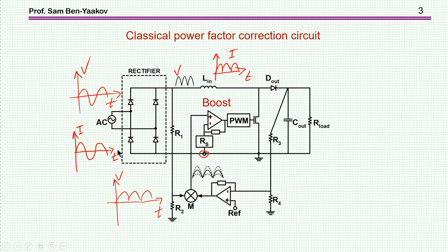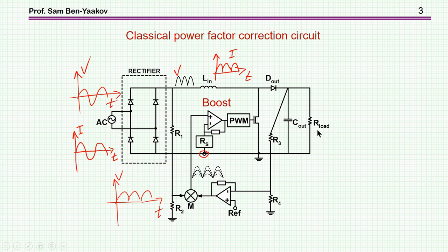This is the classical power factor correction circuit. We have a bridge rectifier rectifying the AC voltage to produce a DC pulsating voltage. This is the boost stage: it's the inductor, switcher, and an output diode. This is the output section — a filter capacitor — and this represents the load.